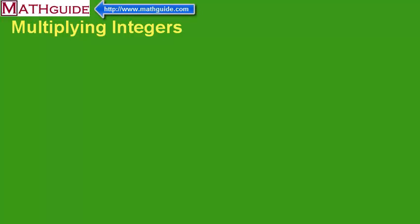This is MathGuide.com. My name is Mark Karadimos, and today we're going to talk about how to multiply integers. We're going to talk about how positive numbers and negative numbers all factor into this. There are going to be five sections to this video.